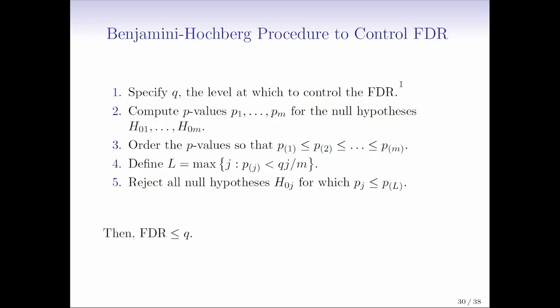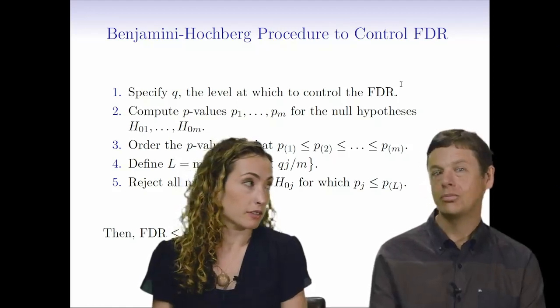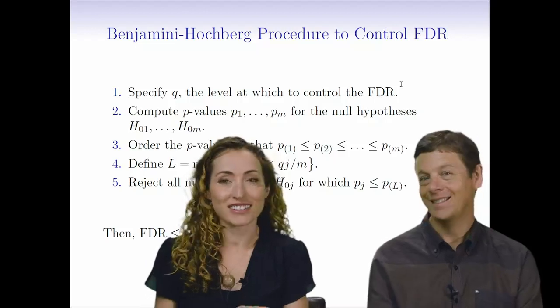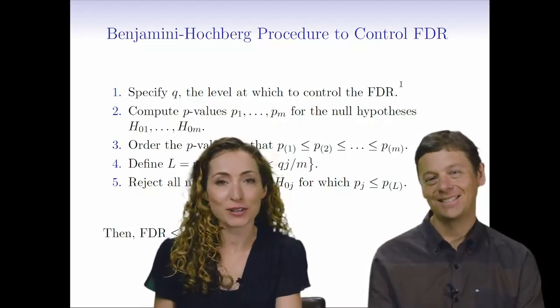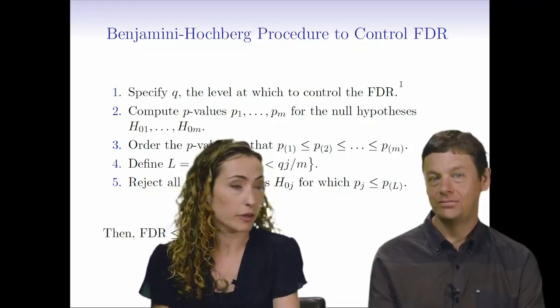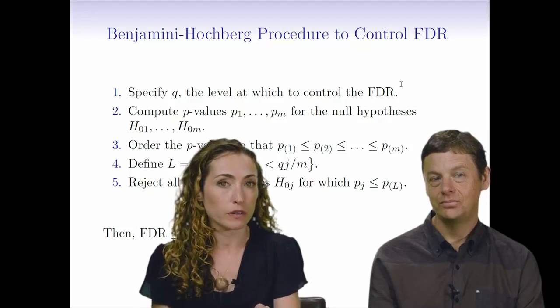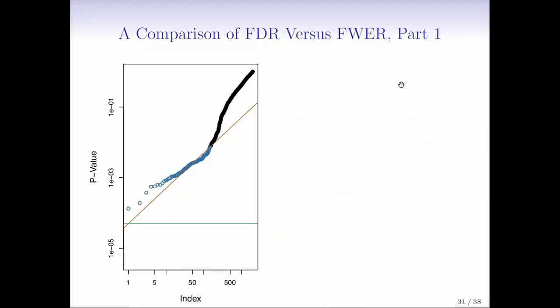And if we do this procedure, then through magic, the false discovery rate is going to be less than or equal to Q. It's not really magic. Statistical theory, maybe? Statistical theory. The FDR is going to be less than or equal to Q. The argument for why Bonferroni procedure works, Gareth showed it to us, it was a couple of lines. The argument for why the Benjamini-Hochberg procedure works is more involved.